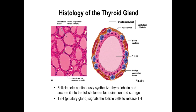These hormones are stored in the colloid lumen until there is stimulation by thyroid-stimulating hormone for the release of T3 and T4 into the circulation. The other type of cell in the follicle epithelium is the parafollicular, or C-cell, which produces calcitonin.